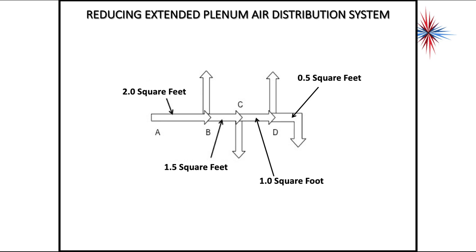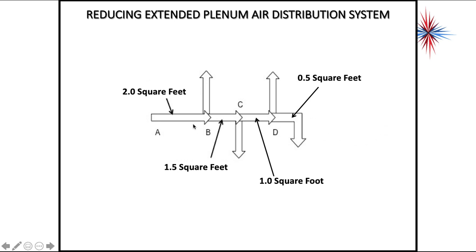If you have too little velocity, you'll start seeing dust and dirt buildup in the ductwork. Also, sometimes you won't be able to reach the far corners of the room the air is blowing into, and the air will feel stagnant. So, extended plenum systems come in two different types: the standard width, which is all one size — you lose velocity near the end — and the reducing extended plenum system, which is more expensive to install, but does a better job of maintaining velocity all the way down. And that takes care of the reducing extended plenum system.